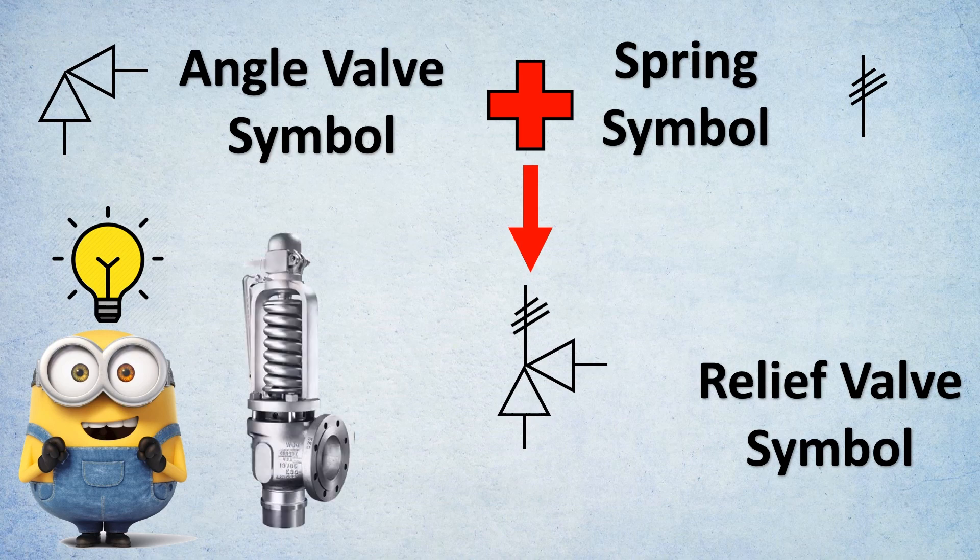And if you look at an actual relief valve, it is very similar. The top portion represents the spring and the bottom portion represents the angle valve. So the P&ID symbol follows the construction and the logic of that particular instrument, vessel, etc.